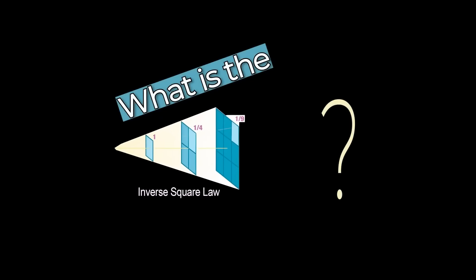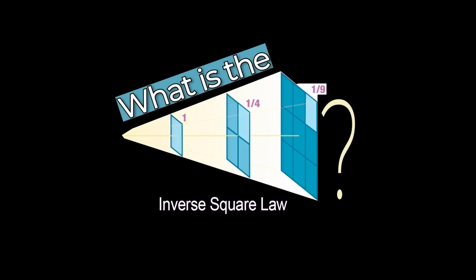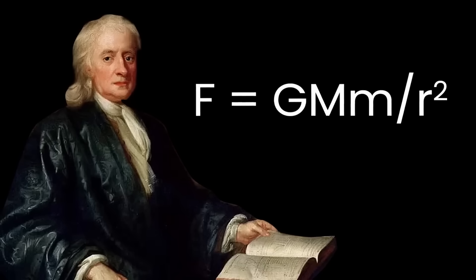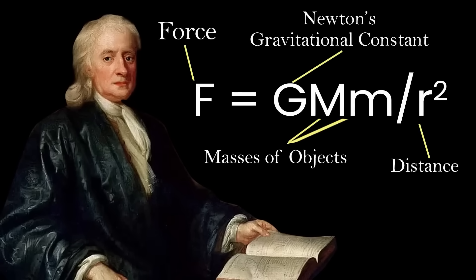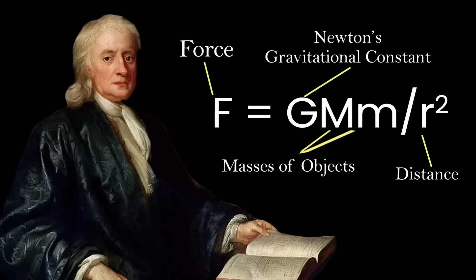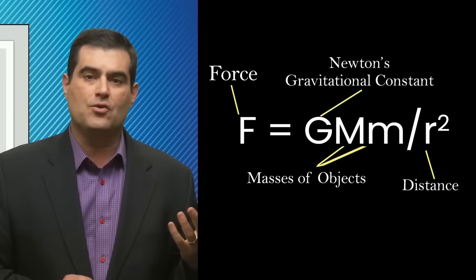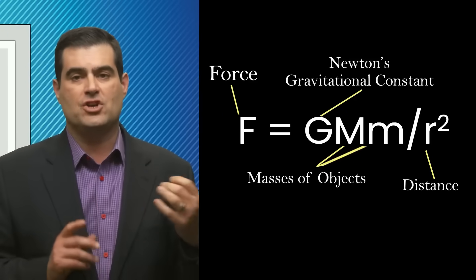So what is the inverse square law? That's merely the fact observed and encapsulated in Newton's famous equation: the gravitational force field between two gravitating massive objects depends on the product of their masses times a universal constant called capital G, Newton's constant,